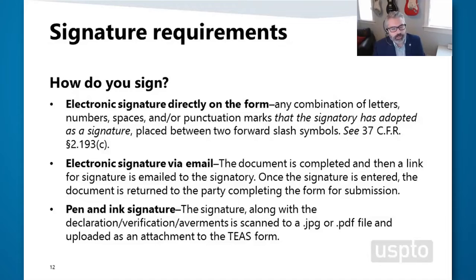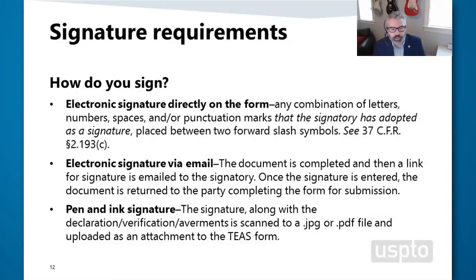We also have a mechanism called e-sign-on for having someone else sign electronically when you're not with the person who is signing. It's a method of completing the document and then providing a link for the signature to be entered by whoever the signatory is. Once they review the document and enter their signature, they can return it to the party who will submit the form.